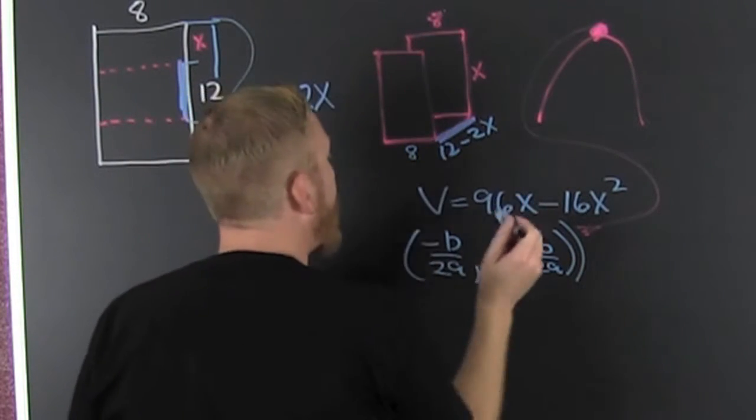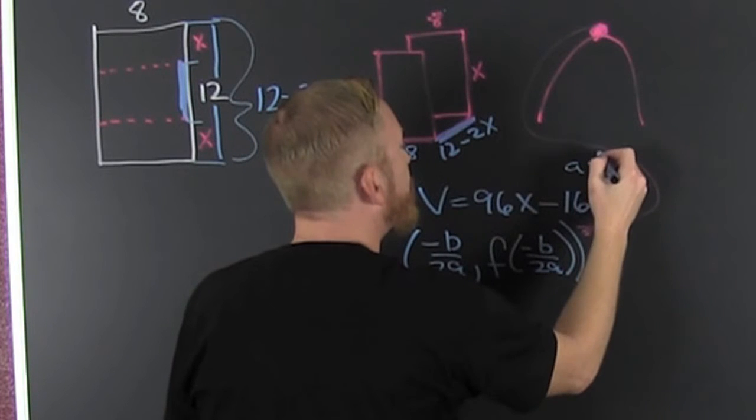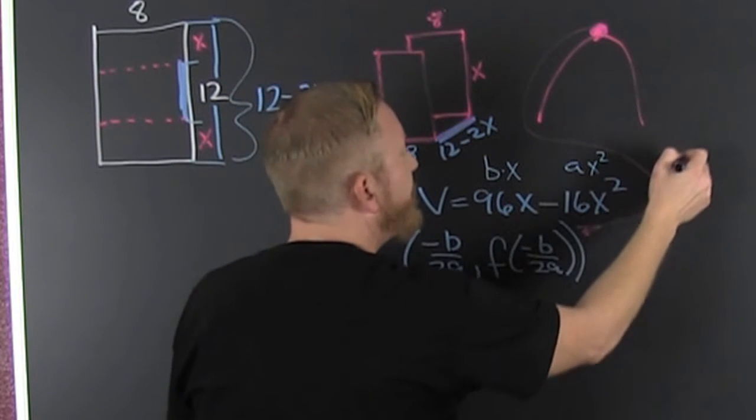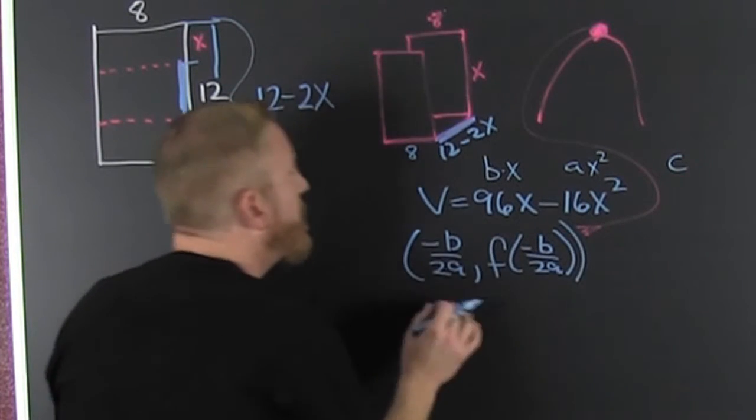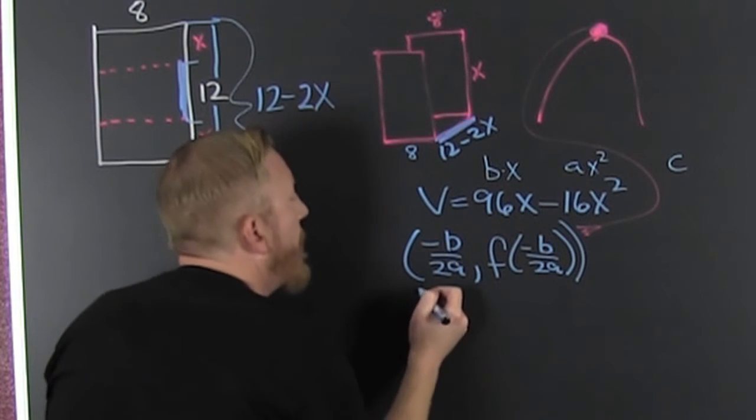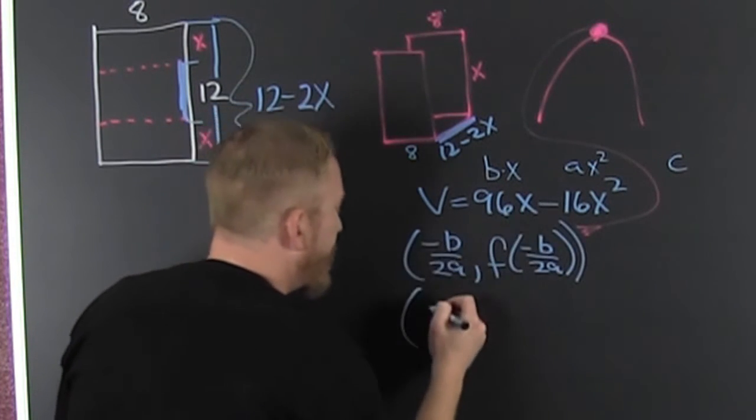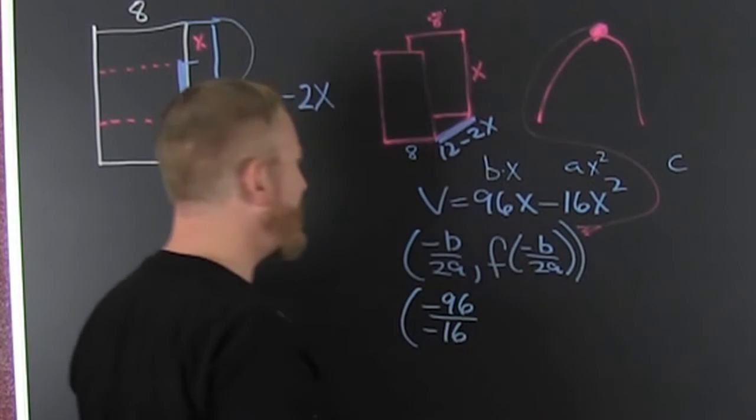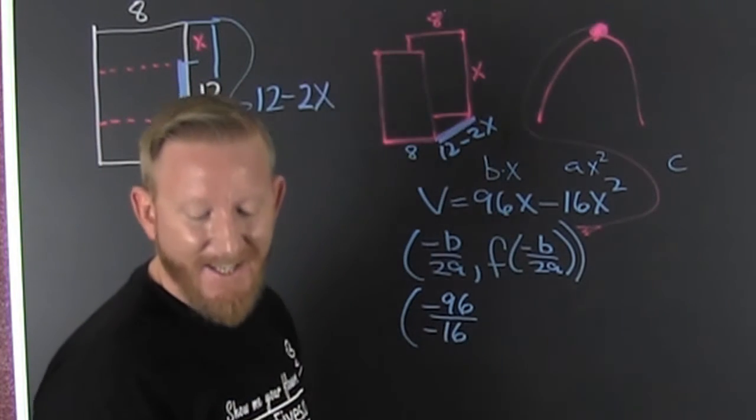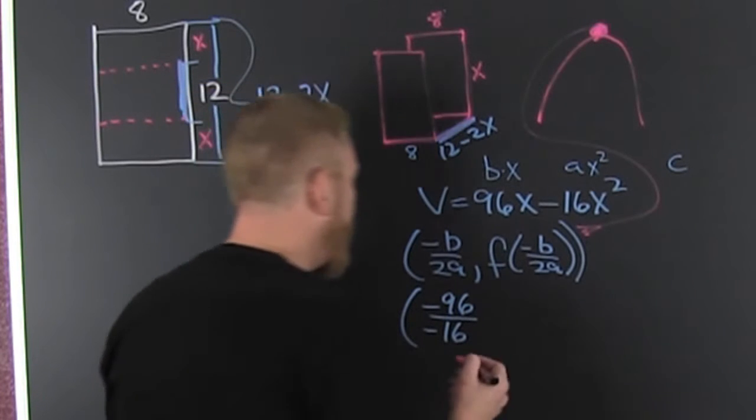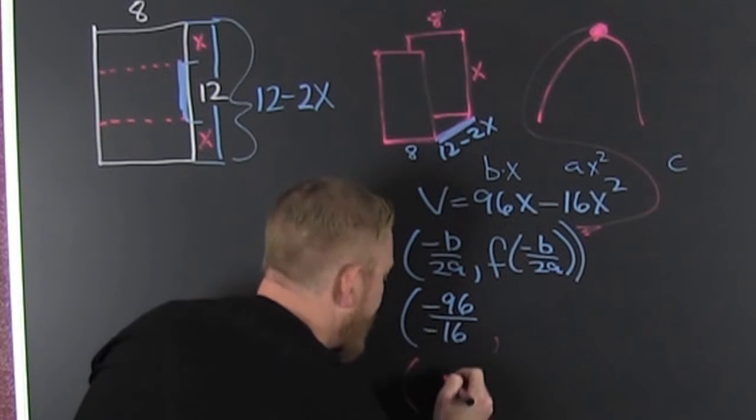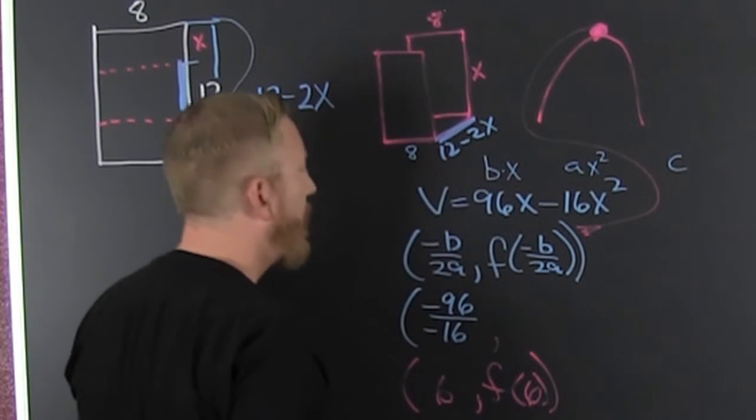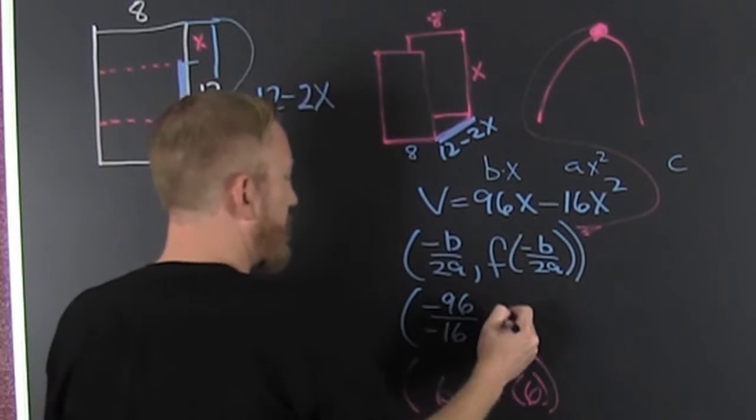So my minus B over 2A, that's minus 96 over minus 16. Six. It goes in there quite nice. So that's six. And then we need F of six to find the maximum volume.